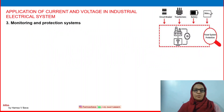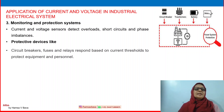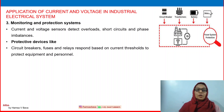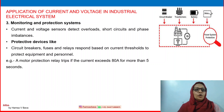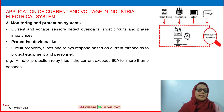Monitoring and protection systems are very crucial. Current and voltage sensors detect overloads, short circuits, and phase imbalances. Protective devices like circuit breakers, fuses, and relays respond based on current thresholds to protect equipment and personnel. For example, a motor protection relay trips if the current exceeds 80 amperes for more than 5 seconds during operation — that is how the protection relay protects the circuit as well as personnel.